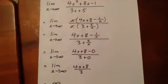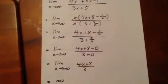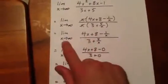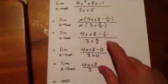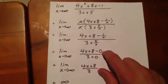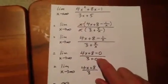What we then have in the numerator is 4x plus 8 minus 1 over x, and in the denominator is 3 plus 5 over x. Well, we treat these limits individually, and we see that this 1 over x term ultimately grows infinitely close to 0, and this 5 over x term ultimately becomes infinitely close to 0.